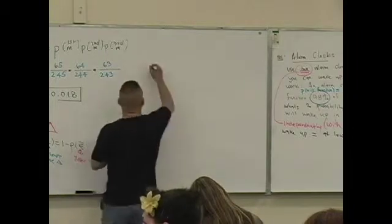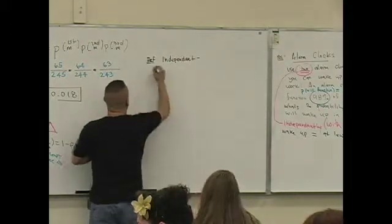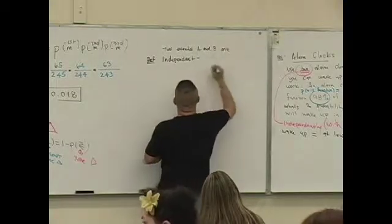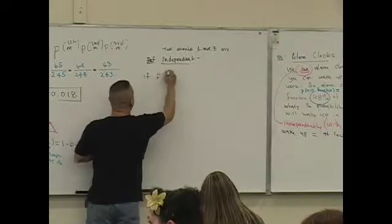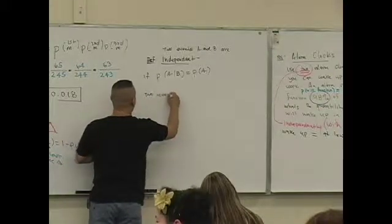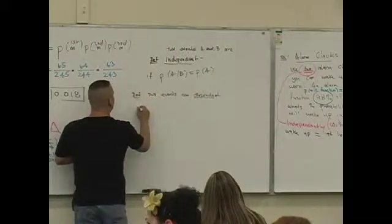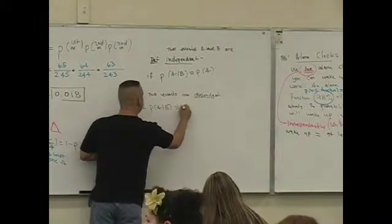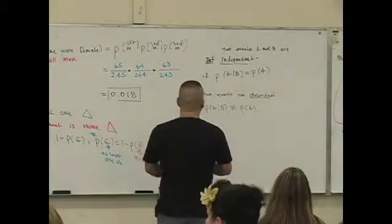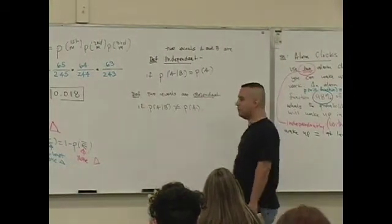Definition of being independent. This is two events, two events A and B are independent if the following probability is true. Two events are dependent on the definition if the probability that A given B is not the same as the probability of A. Let's go through this idea. It's an interesting concept. Probability of A given B equals probability of A.